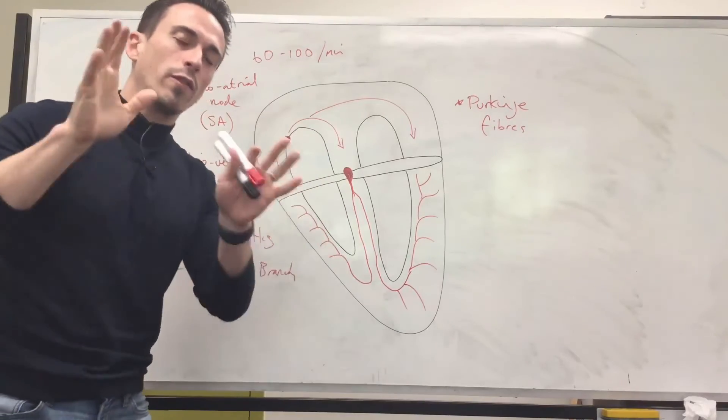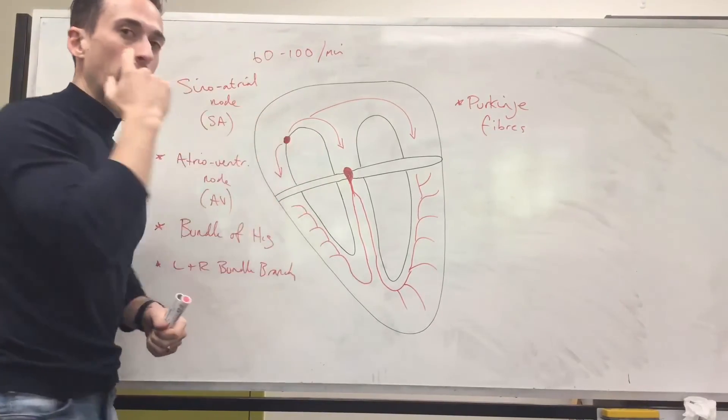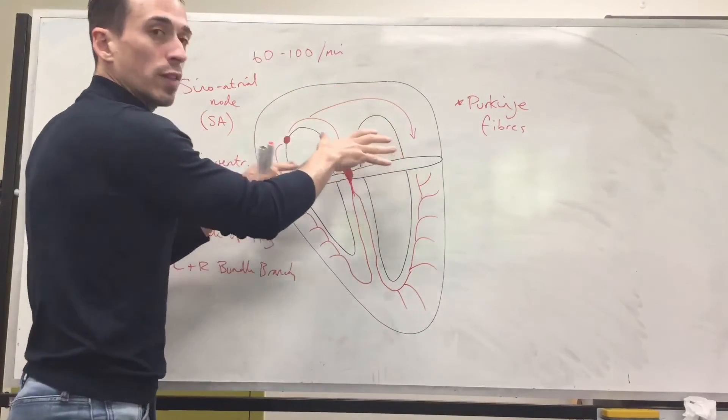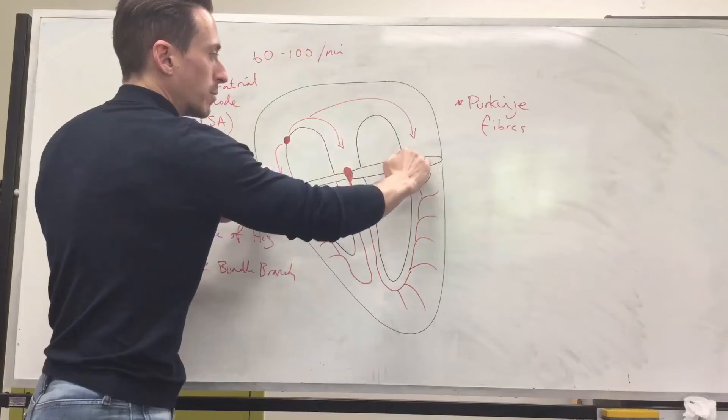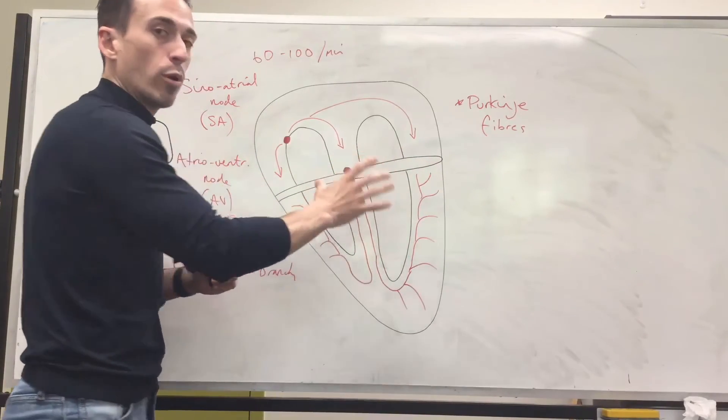So what do we have? What's the order of electrical conduction of the heart? SA node fires off around about 60 to 100 times a minute. It shoots through the myocardium of the atria. It gets stopped by this bit of tissue and funnels through the AV node. That's a break of around about 0.4 of a second.